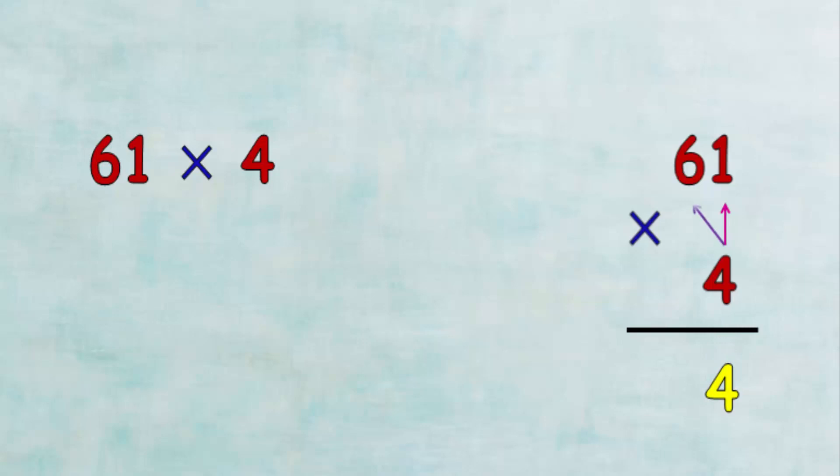And multiply 4 by 6, which equals 24. Therefore the product of 61 by 4 is 244.